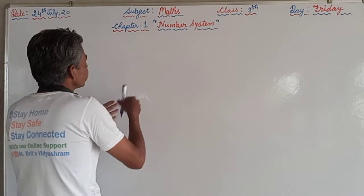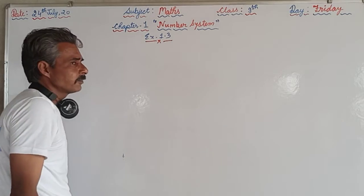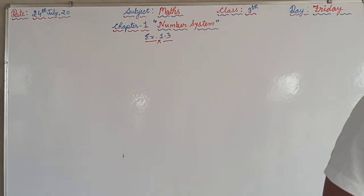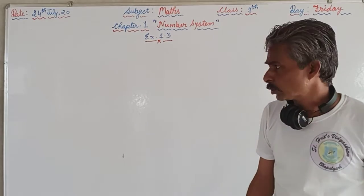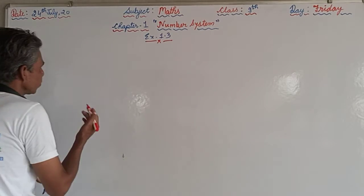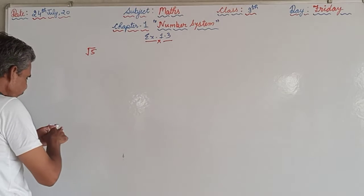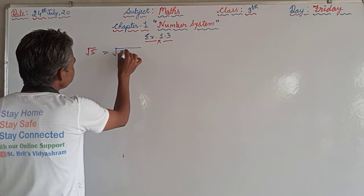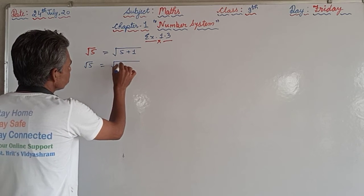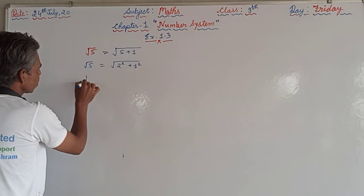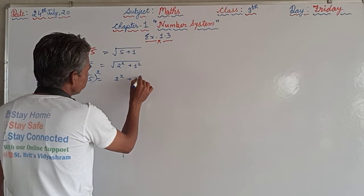One question is given there in your book in Exercise 1.3 that we are supposed to mention: represent under the root 5 on the number line. I told you yesterday the method how to represent the number under root 5 on the number line. So today again we can use another method. Under root 5 can be written as under root 2 squared plus 1 squared.